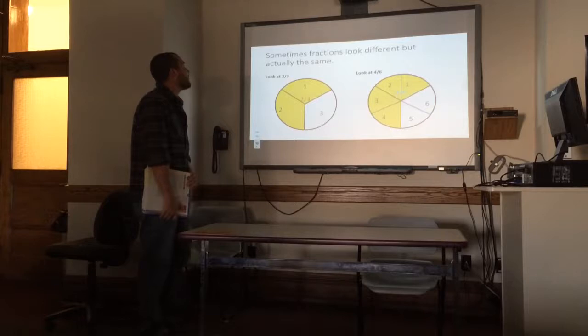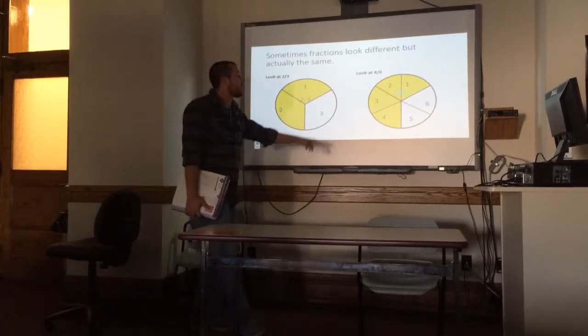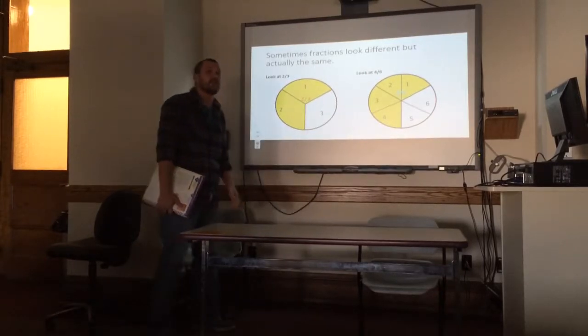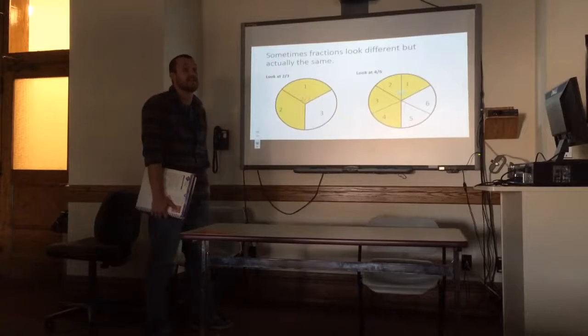So our first example here is we have two different fractions. On the left here we have two-thirds, and on the right we have four-sixths. Although they look different when they're written, two-thirds, four-sixths, they are in fact the same fraction.